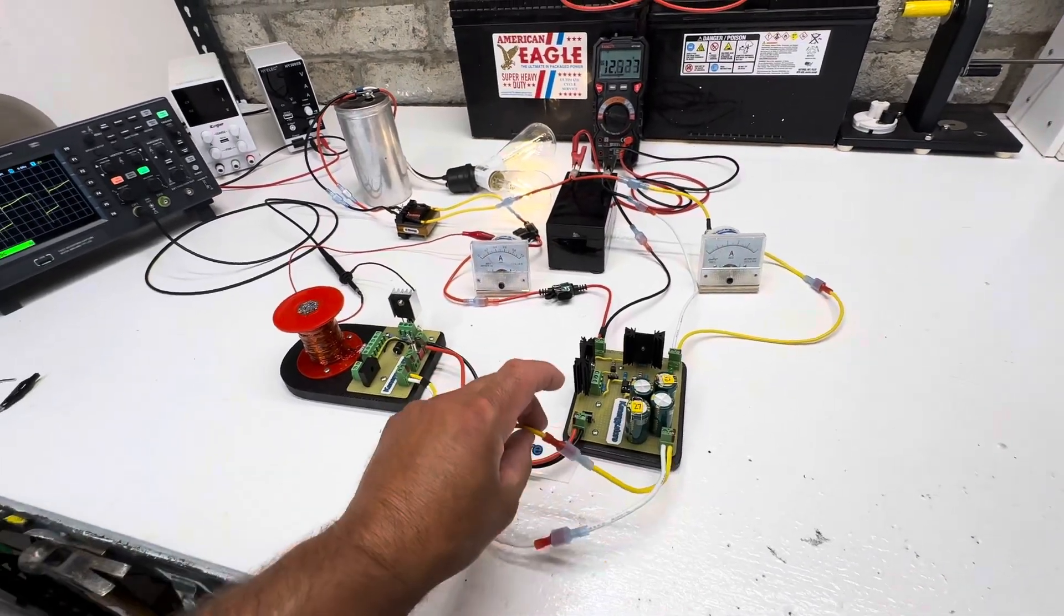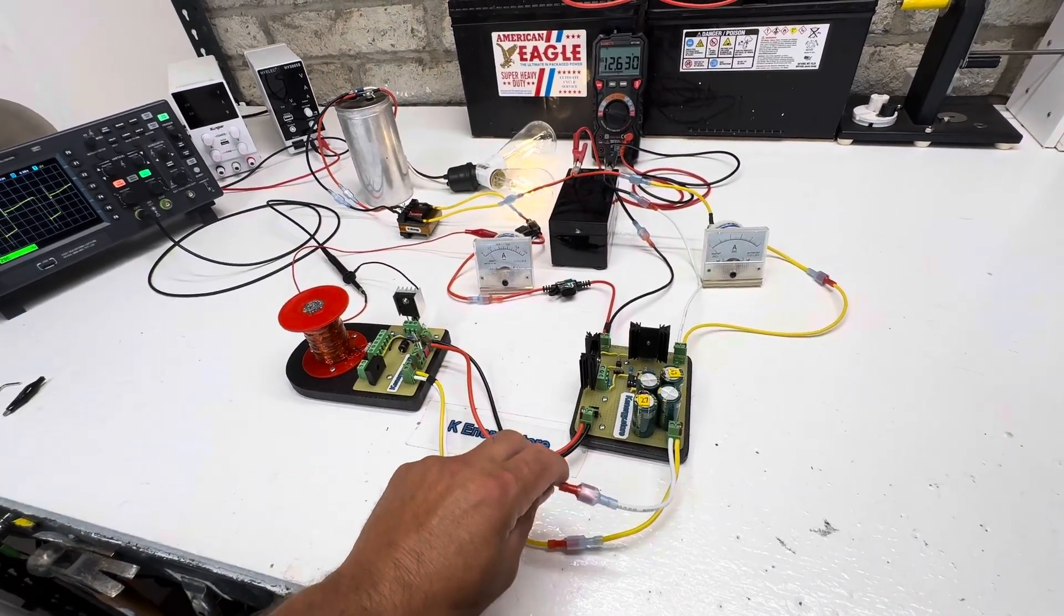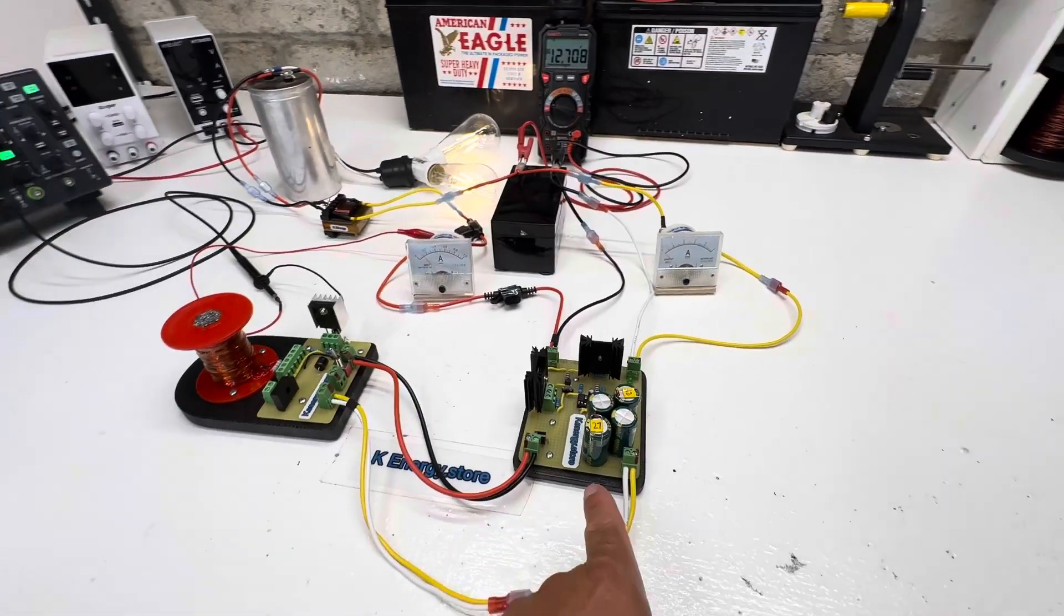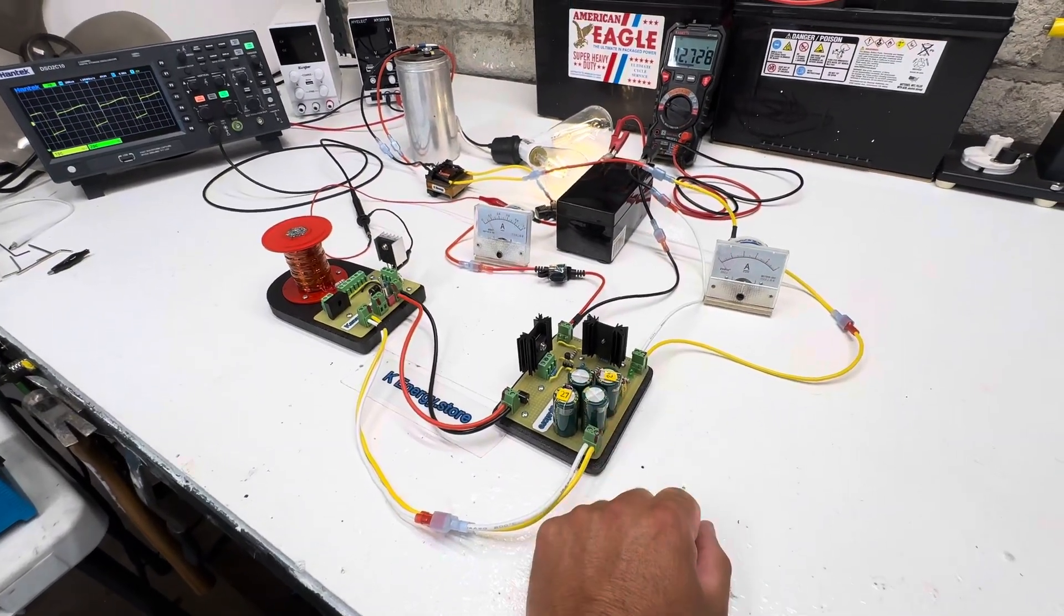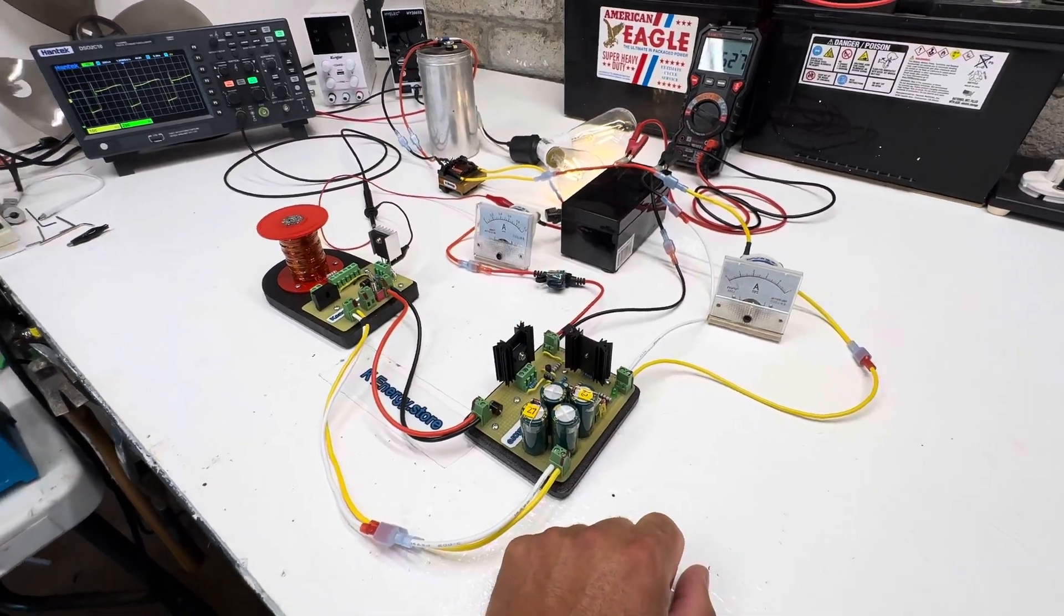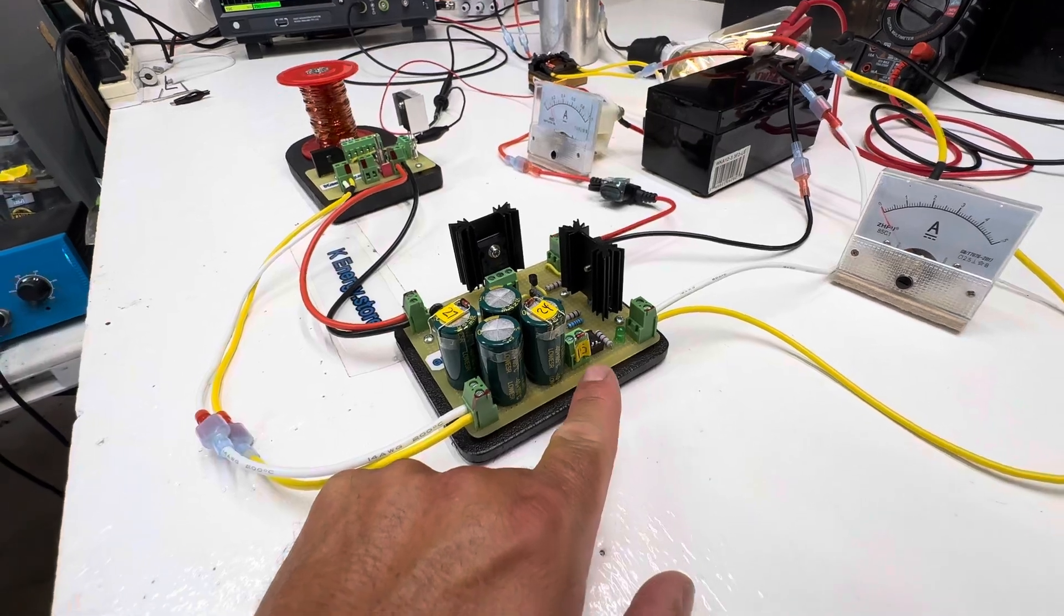On all my videos, I have yellow as positive and white as negative, where everything's consistent. This cap dump is four 10,000 microfarad capacitors in parallel, and then we have a 15 volt zener.